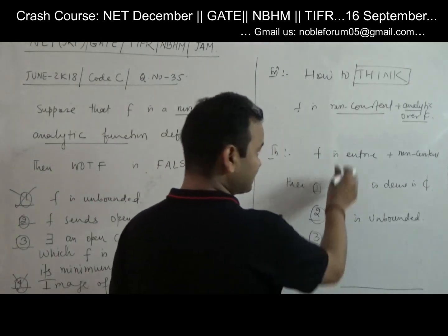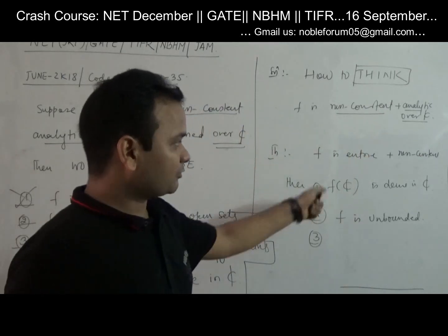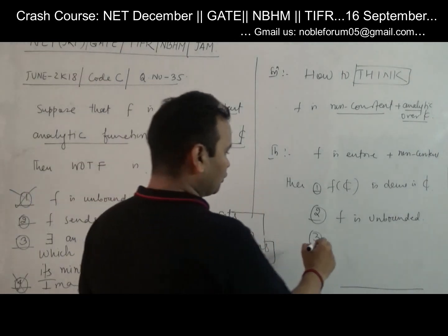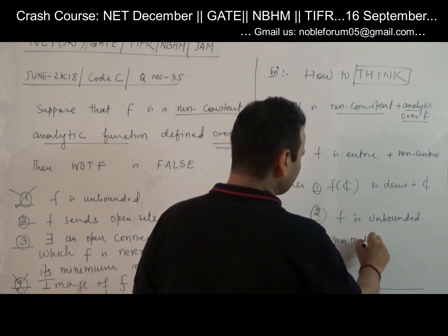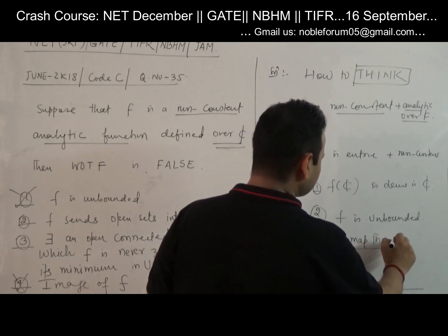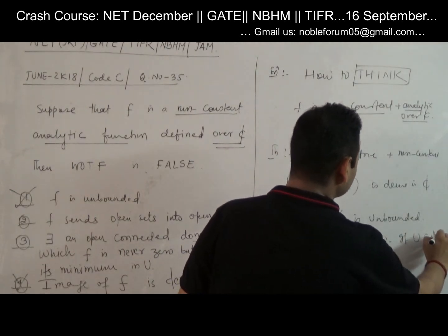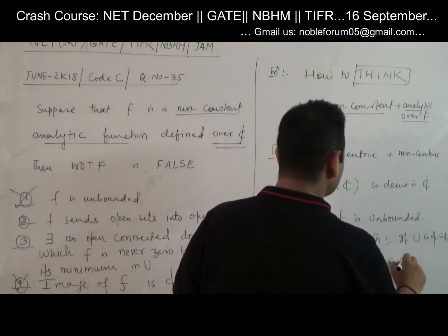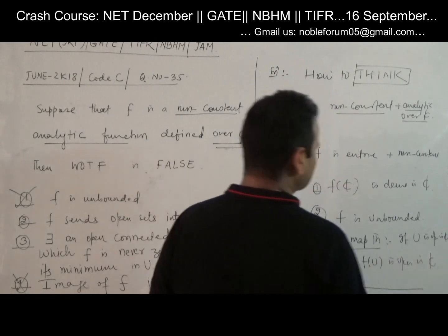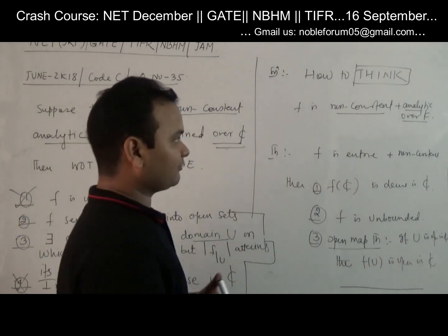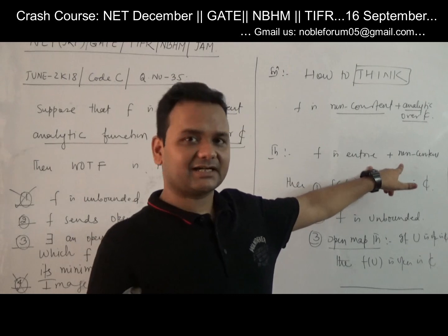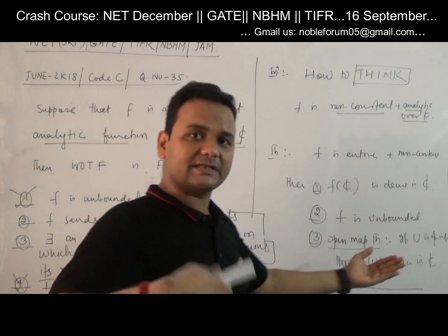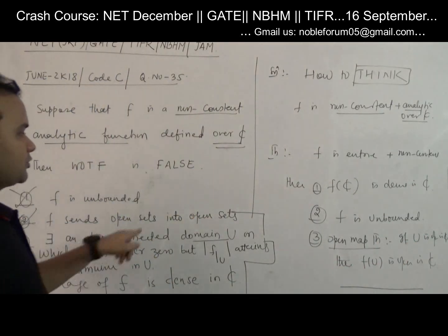Now the third part — option A. This is called the Open Mapping Theorem. The Open Mapping Theorem says: if U is open in ℂ and f is a non-constant analytic function, then f(U) is open in ℂ. So the image of an open set is an open set. Therefore, option A — f sends open sets to open sets — is also a correct statement, not false.